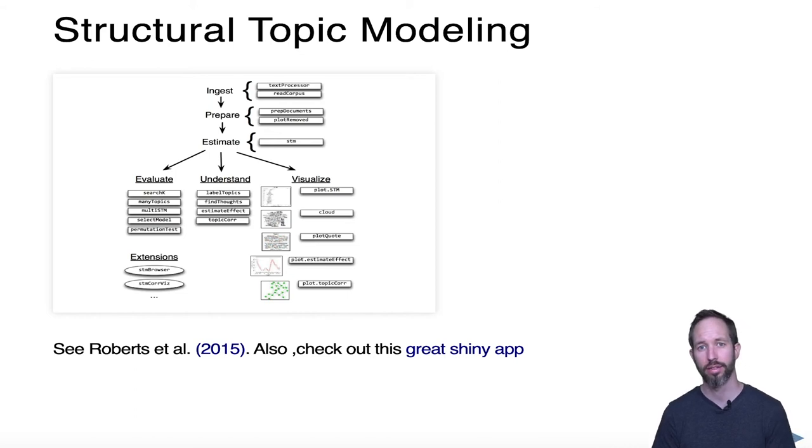This is a package developed by Molly Roberts, Brandon Stewart, and Dustin Tingley, three political scientists, and they have just a great R package. It combines a lot of the steps we've already learned in our basic text analysis class, like text preprocessing, and it also runs a structural topic model. A structural topic model is very similar to an LDA model except that it exploits metadata about a document in order to improve the classification of topics within a corpus. Let me give you an example.